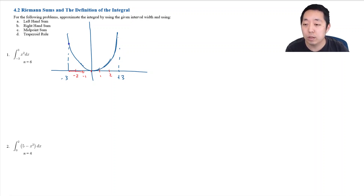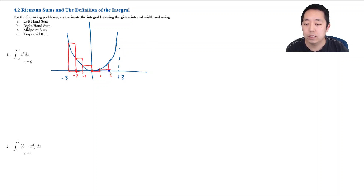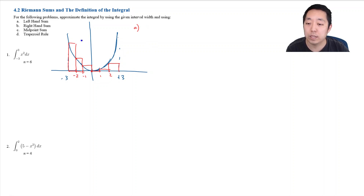For the left-point sum, the left part of each rectangle touches the curve. So the rectangles have heights determined by the left endpoint of each interval. These are the rectangles I sum up for the left-hand sum.